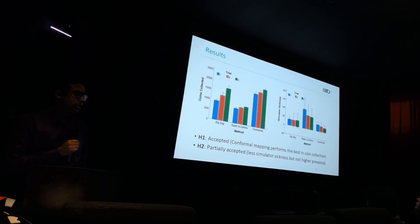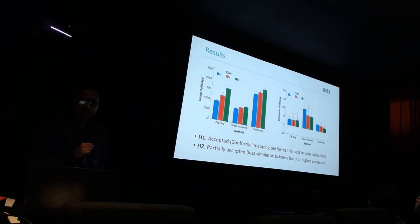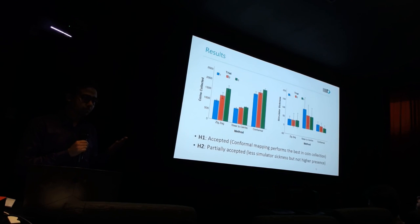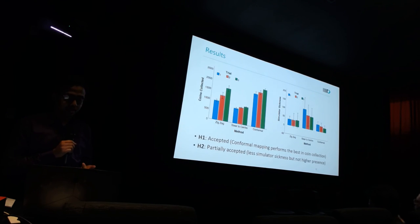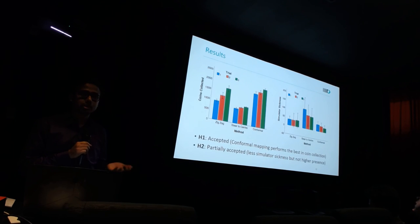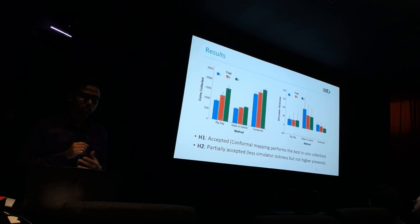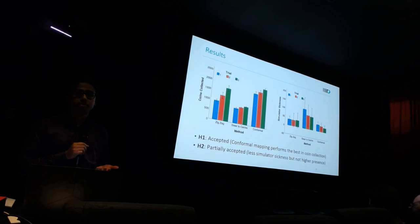With the results, what we noticed is our first hypothesis was accepted. The conformal method performed the best and had the highest number of coins collected. We think this is because participants didn't have to reorient themselves like in the other two methods. The second hypothesis was partially accepted. We found less simulator sickness, which could again be because of the less rotation participants had to do in the physical space, but we didn't find any significant difference for presence.